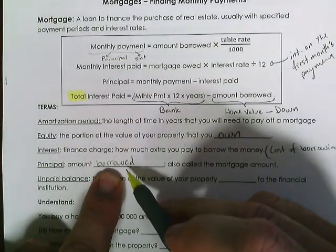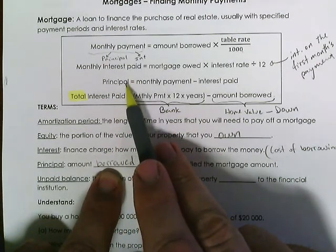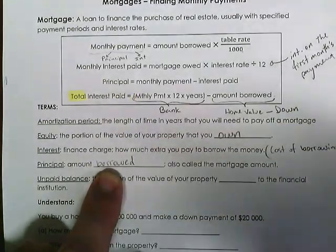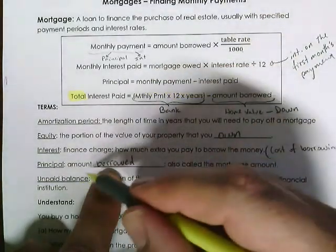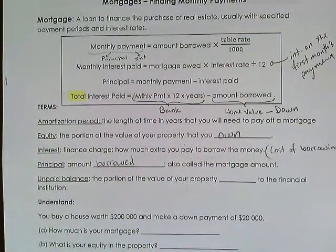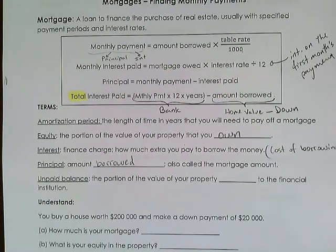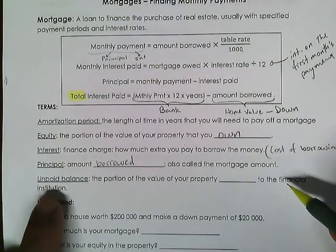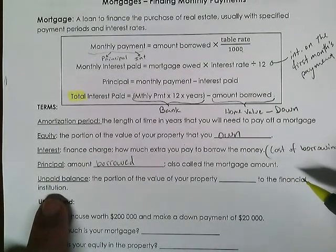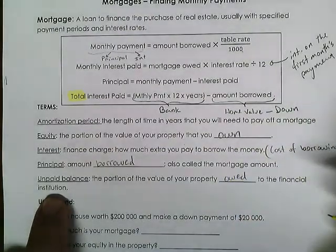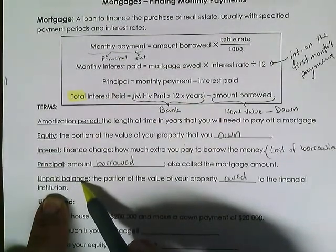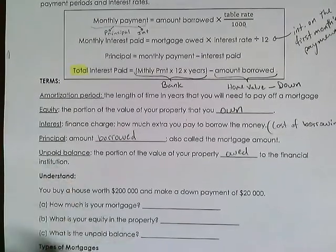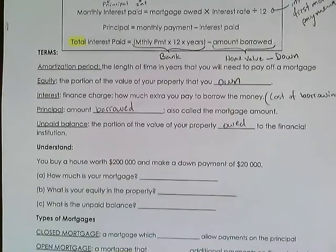Be careful to differentiate: the principal in a single monthly payment refers to just that one payment's portion, but the big chunk you borrow all at once at the very beginning — say $200,000 — is also called the principal. The principal portion of each payment reduces the total principal amount you owe the bank. Unpaid balance is the portion of the property value still owed to the financial institution.